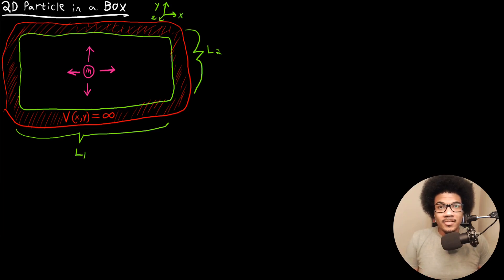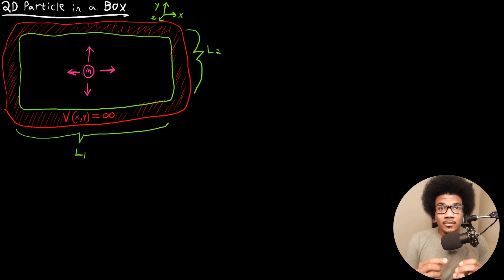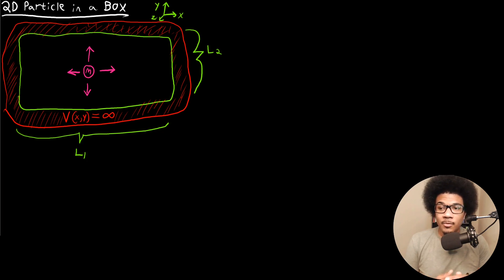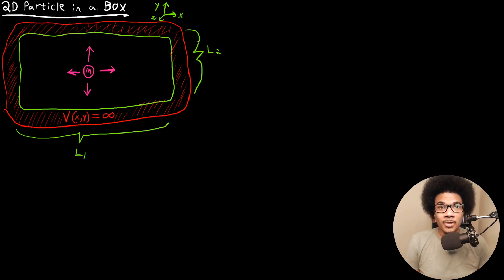In this video, we're going to discuss the two-dimensional particle in the box. We've already discussed the one-dimensional particle in the box — we introduced the wave function and its energy values and energy levels. So you've already had an introduction to the particle in the box problem in one dimension. What happens when we introduce another dimension? What happens when we have a two-dimensional box and a particle that can move in two directions?